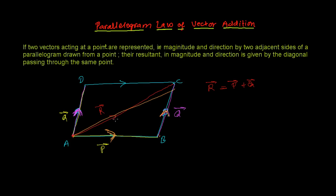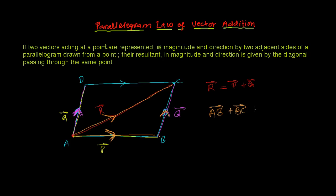The third side is taken in reverse order. So I'm going from here, I reached here, and then I'm going there in reverse order. From the triangle point of view, vector AB plus vector CB equals vector AC. So the parallelogram law of vector addition is no different from the triangle law of vector addition — it's the same.